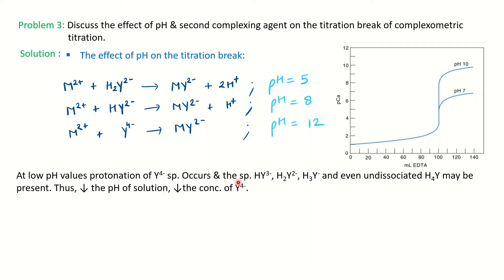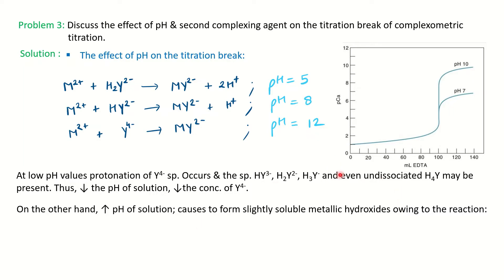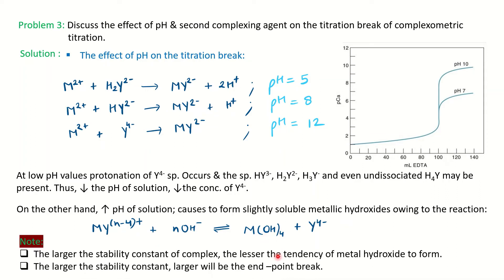As pH decreases, the free concentration of the ligand decreases, and the sharpness of the endpoint also decreases because less free ligand is available. On the other hand, on increasing pH, the metal ion can form slightly soluble hydroxide complexes in alkaline solution. These hydroxide complexes are more stable than the metal-EDTA complex at high pH, which negatively affects the titration.